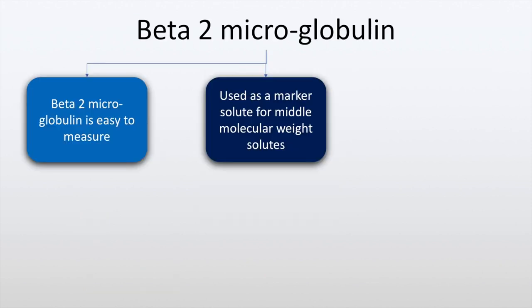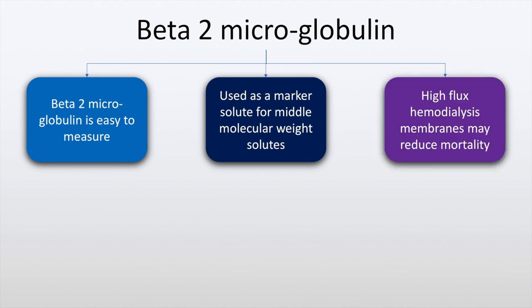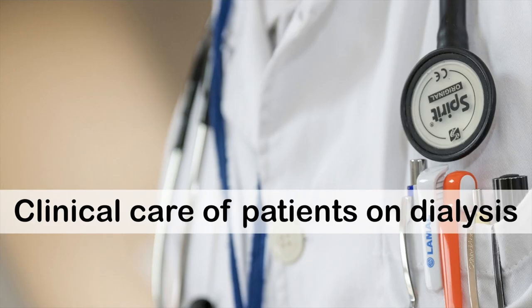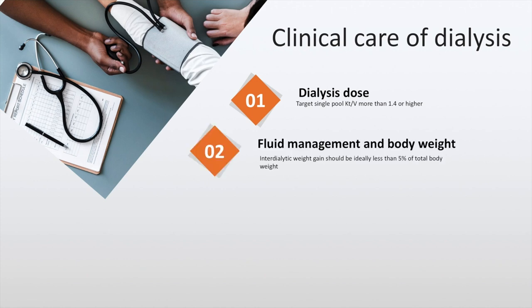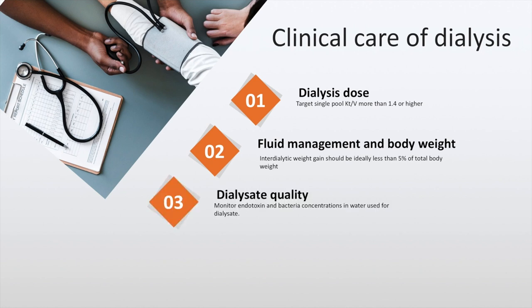Beta-2-microglobulin is easy to measure and is used as a marker for middle molecular weight solutes, and high-flux hemodialysis membranes may reduce mortality. The clinical care of patients with dialysis includes dialysis dose, as already described, at 1.4 or higher. Fluid management and body weight may be done by monitoring intradialytic weight gain, and this should be less than 5% of total body weight. The dialysate quality should be monitored for contamination with endotoxin and bacteria.